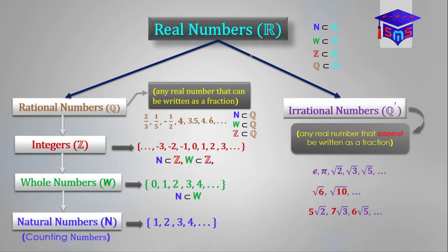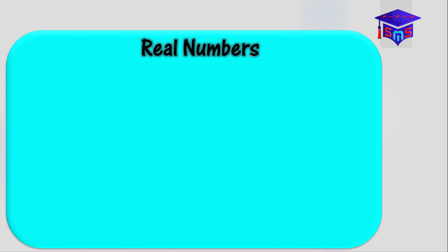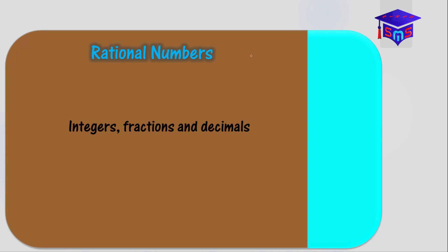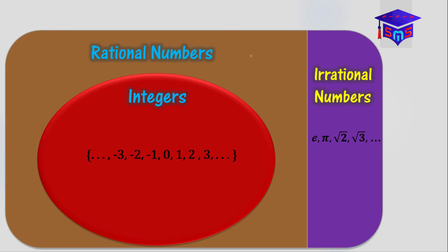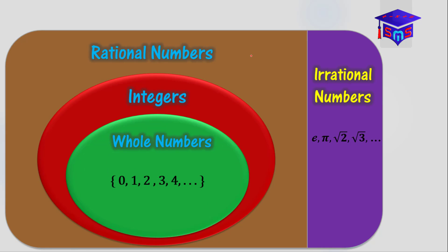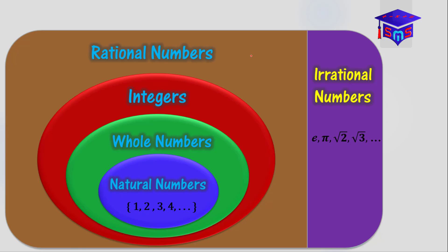You can view this classification in a different form. The set of real numbers consists of the set of rational numbers — which includes integers, fractions, and decimals — and the set of irrational numbers. Within the set of rational numbers, you have the set of integers from negative infinity to positive infinity. Within integers, you find whole numbers from zero to positive infinity, and within whole numbers, you find natural numbers from one to positive infinity. When you put rational and irrational numbers together, they form the mother set called the set of real numbers. Thanks for watching.